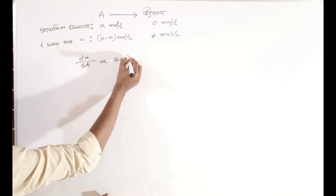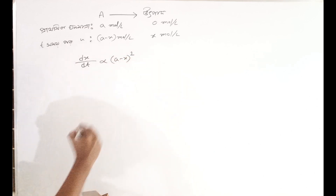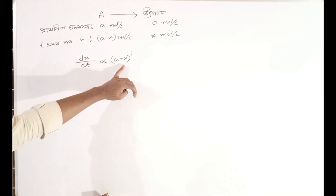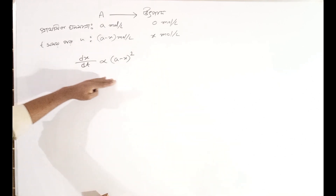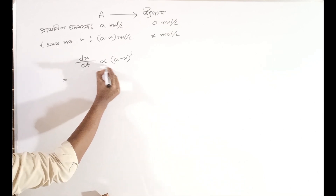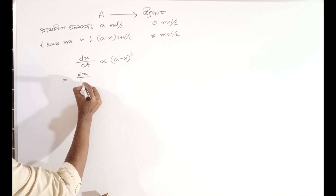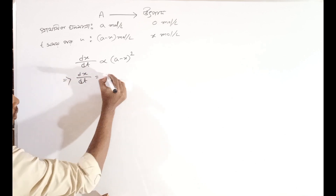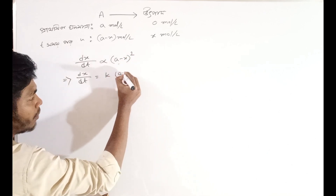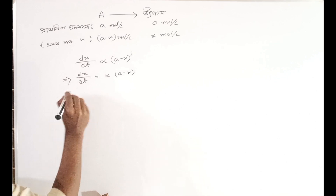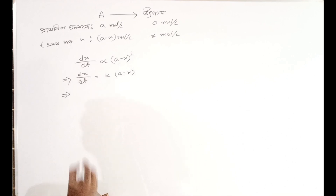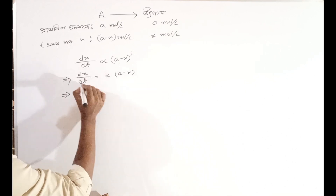dx/dt is proportional to (a minus x) to the power 1. This is called prathom kromo vikiraya — first-order reaction — where the rate is proportional to the first power of concentration (a minus x). So we write it and we proceed with first-order reaction — we want to match the proportionality constant. We see that proportionality k, as a constant, gives (a minus x)^1.